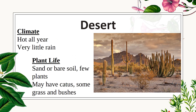You also have a desert. The desert climate is hot all year with very little rain. Plant life is limited — there's sand or bare soil with few plants. Many have cactus (pardon the typo there) and some grass and bushes.